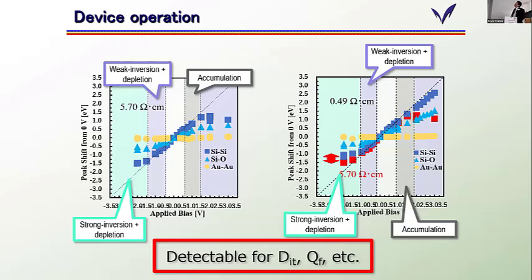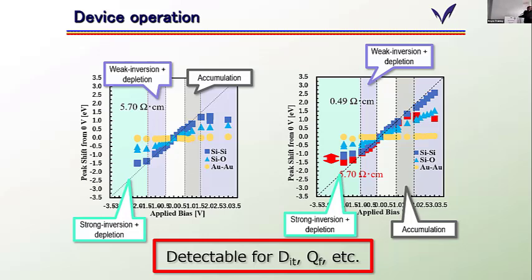From simulation, we conclude that the saturation bias corresponds to accumulation mode, weak inversion mode, depletion mode, and so on. The saturation voltage depends on substrate resistance, reflecting the difference in band bending in the semiconductor — and this trend can be reproduced by assuming the appropriate carrier concentration. Different resistivity provides different band bending in the semiconductor. By using this technique, we should be able to evaluate interface states, or fixed charge in the insulator. This is very powerful for characterizing the state-of-the-art MOS structure using high-k gate dielectrics or metal gates in state-of-the-art LSI.